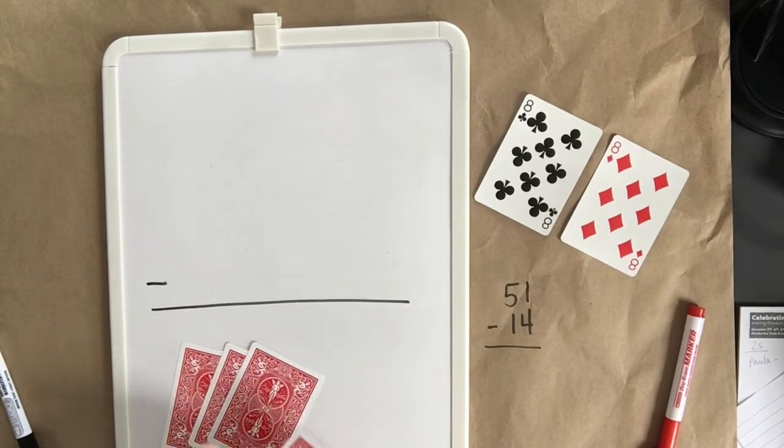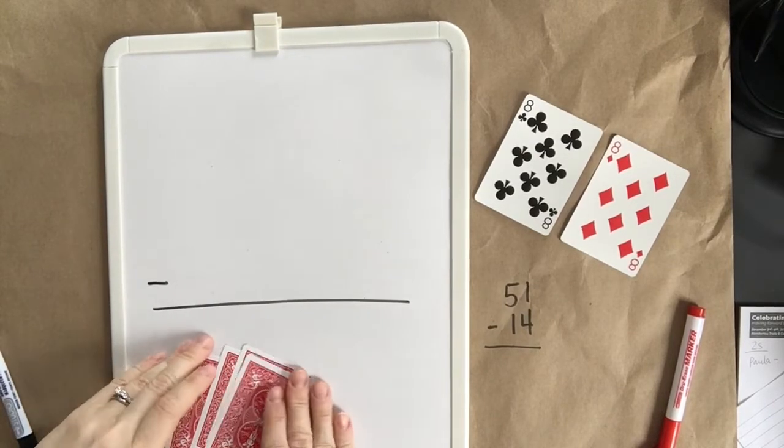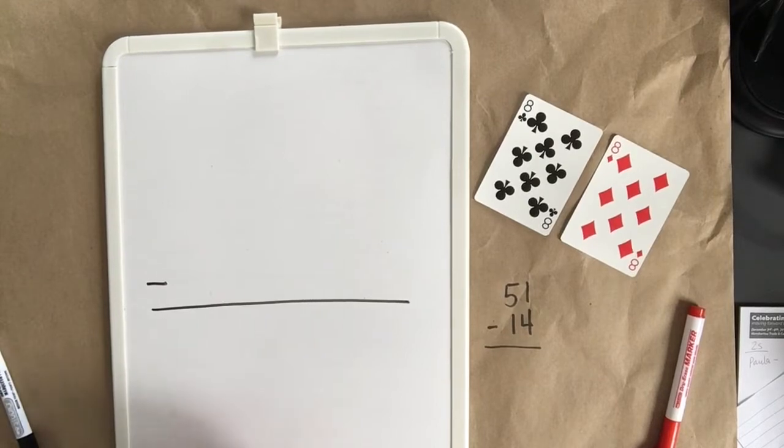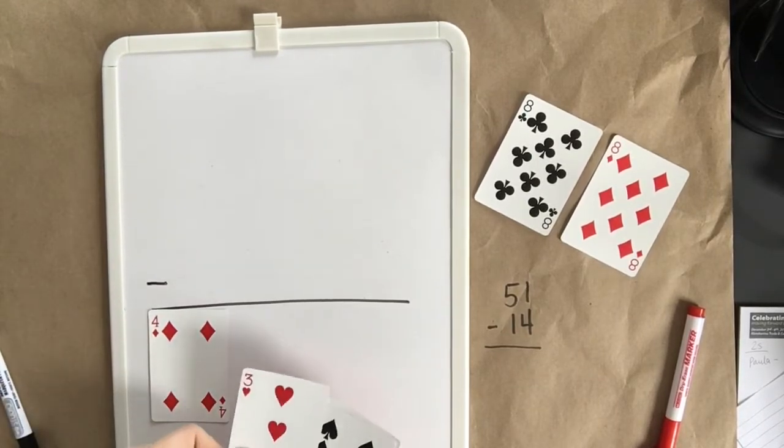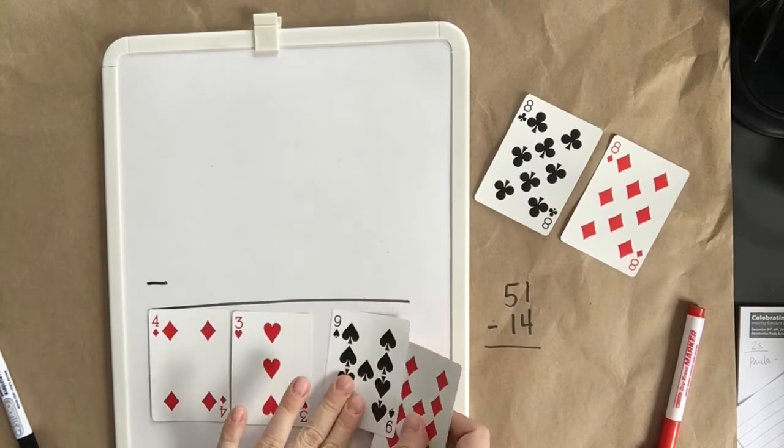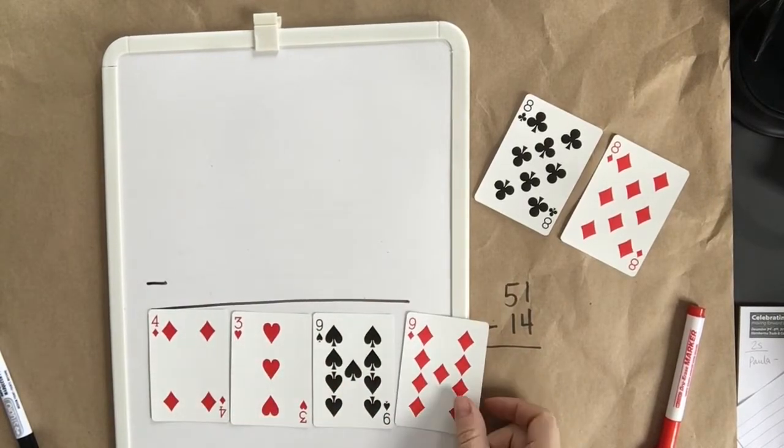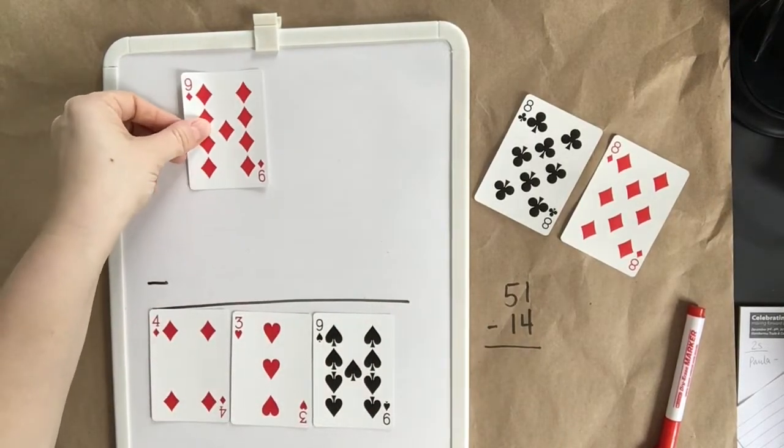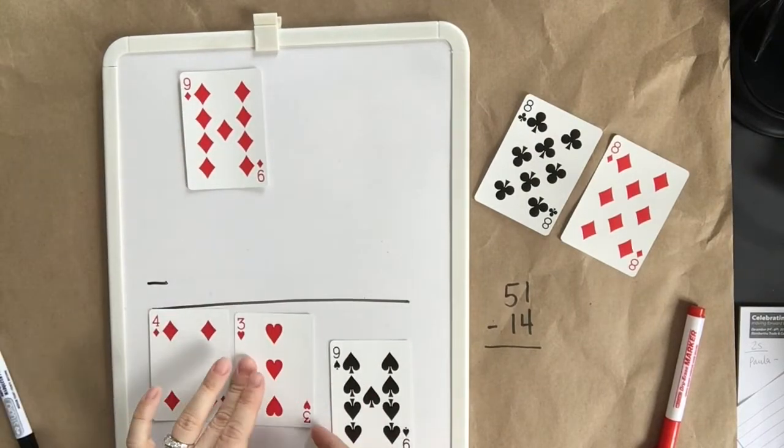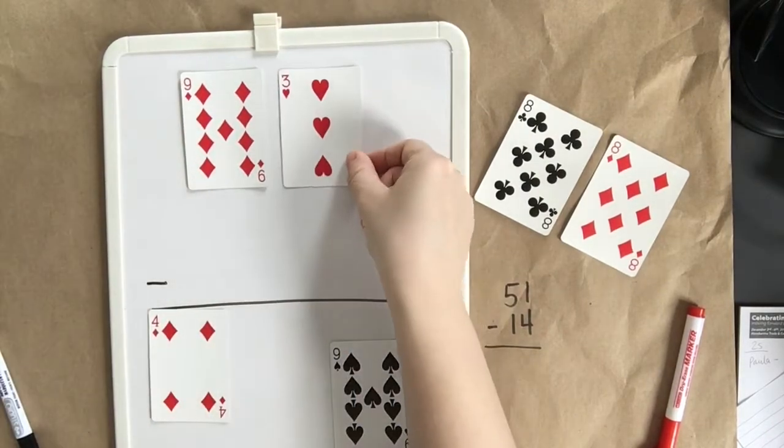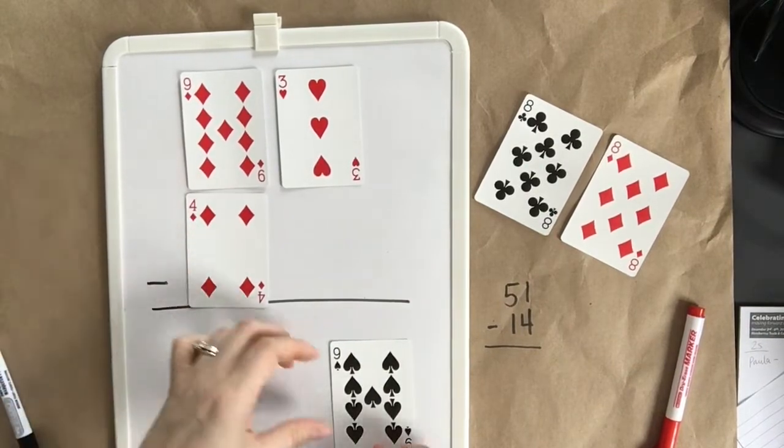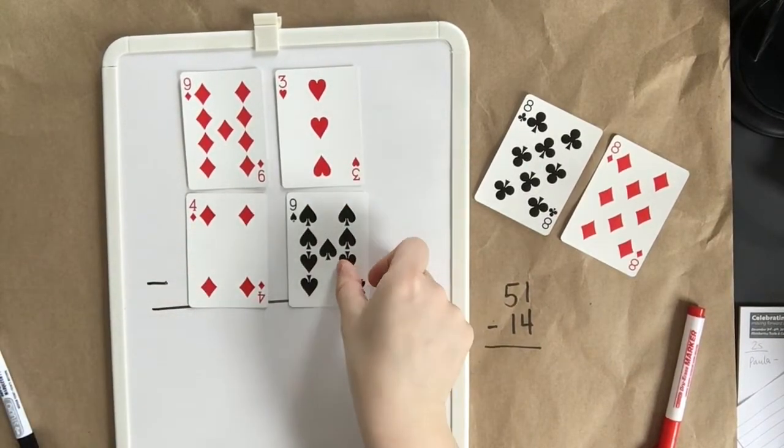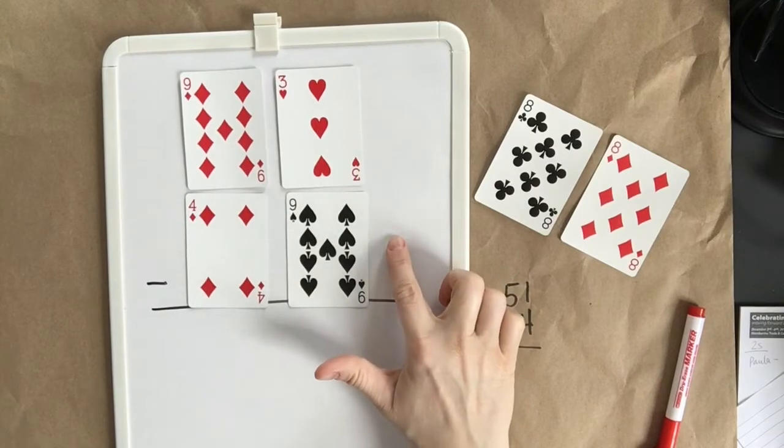Now it's player 2's turn. Select 4 cards and flip them over. We've got a 4, a 3, a 9, and a 9. That person might choose 93 as their first number and 49 as their second number. 93 take away 49.